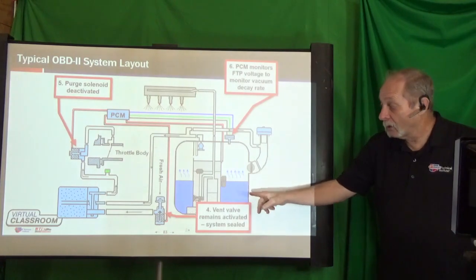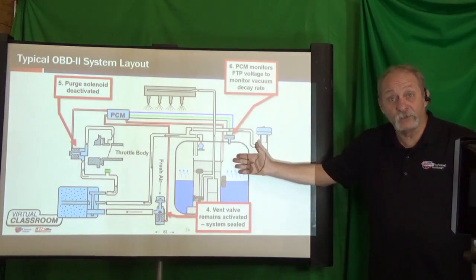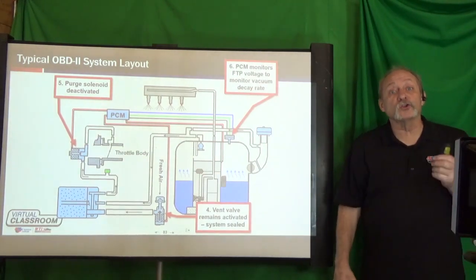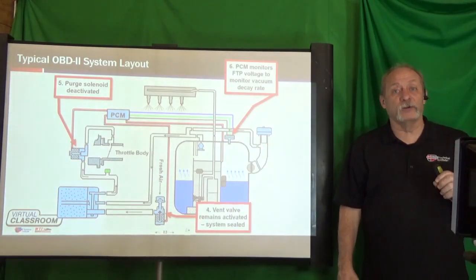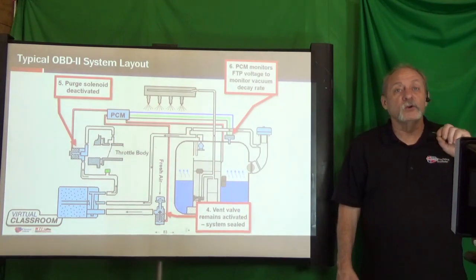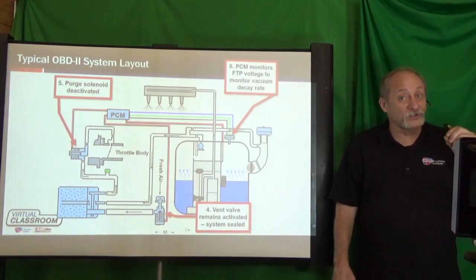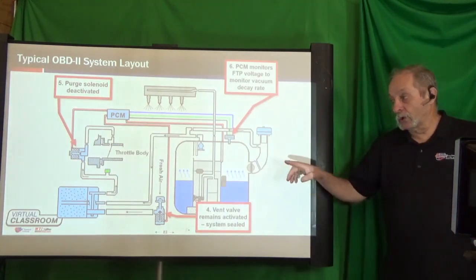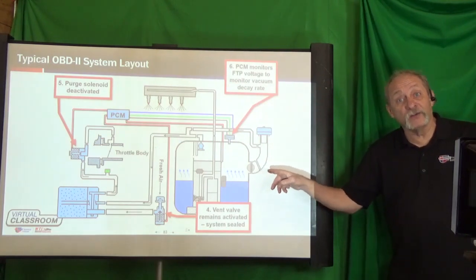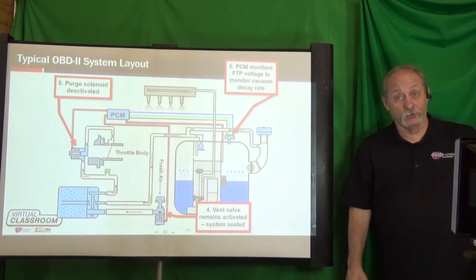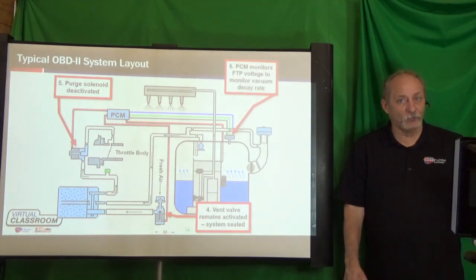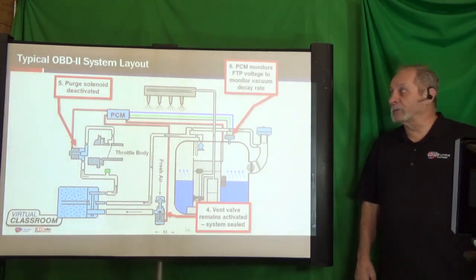Here we have fuel with vapor space above it. The computer also has to consider how much fuel is in the tank. It will take a certain amount of time for that vacuum to decay, and the computer judges whether that decay rate corresponds to a leak greater than or less than 20 thousandths of an inch. Seeing vacuum decay is normal — the question is how fast.